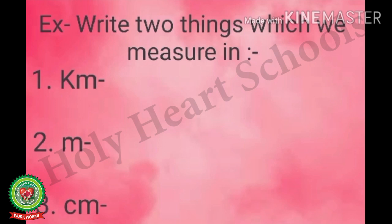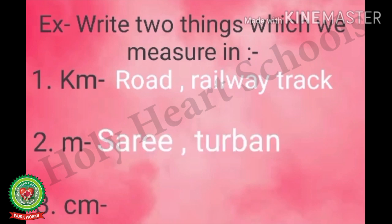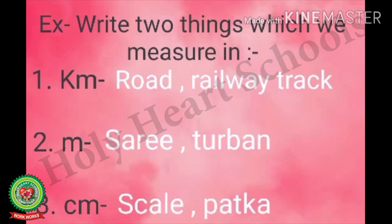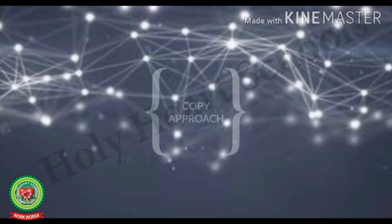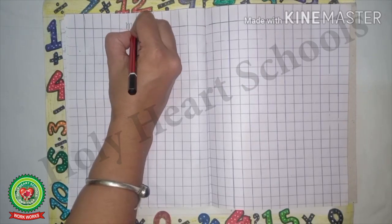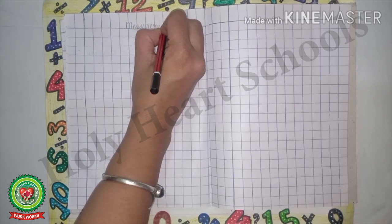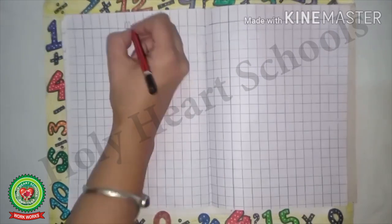The next exercise: write two things which we measure in each unit. Number one, kilometer — we measure road and railway track in kilometer. Number two, meter — we measure sari and turban in meter. Number three, centimeter — we measure scale and patka in centimeter.